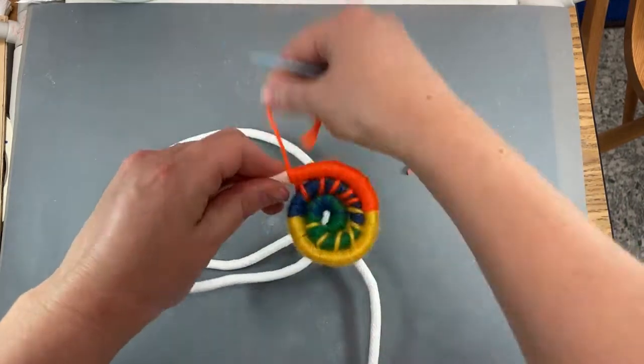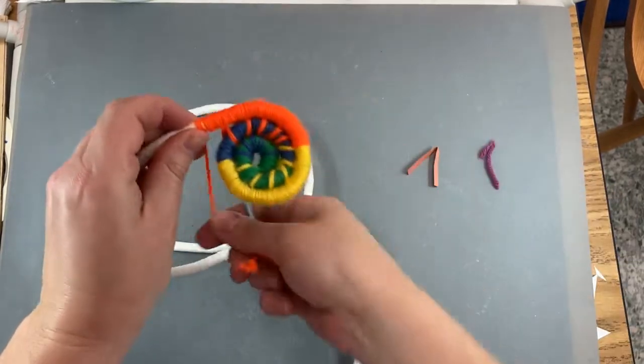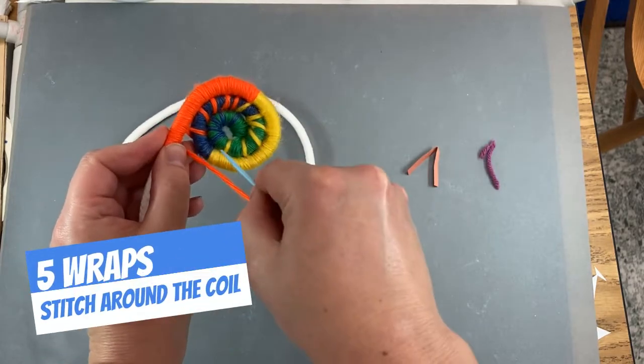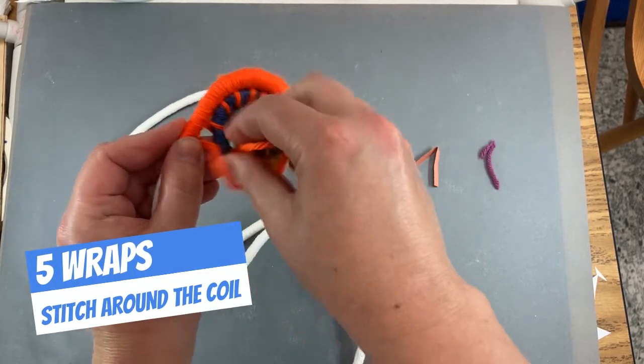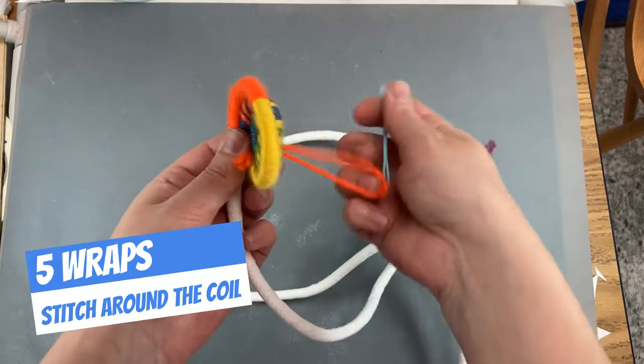One, two, three, four, five around the coil, make a stitch and tighten it up.